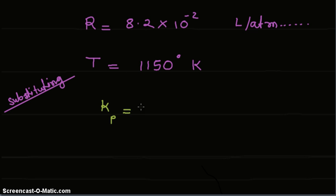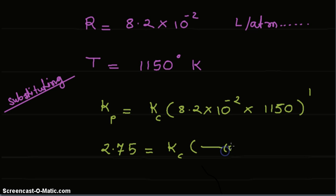Substituting these values, we get Kp equals Kc times R (that is, 8.2 × 10^-2) times temperature (1150), raised to delta n. Delta n is 1, and the other value remains as is.